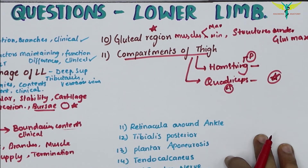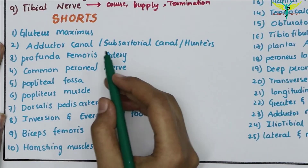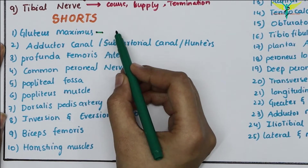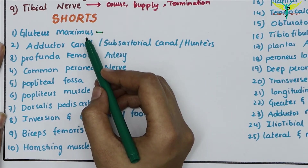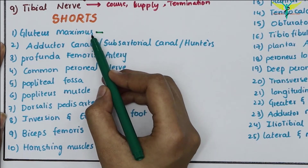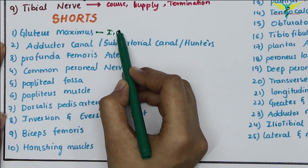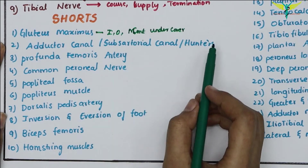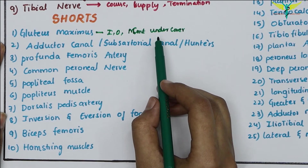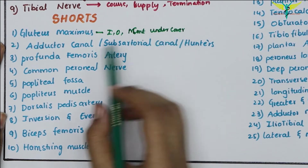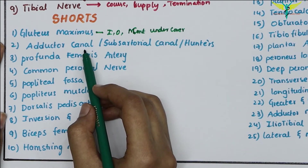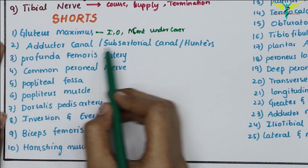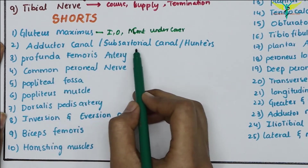Now coming to the short questions. Gluteus maximus is important — its nerve supply, extent, origin, insertion, and the contents under cover of the gluteus maximus. The adductor canal is very important and can be asked as the adductor canal, subsartorial canal, or Hunter's canal. Include a minimum of two diagrams with nice coloring and labeling.